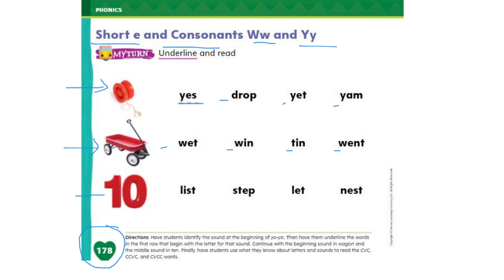The last picture is number ten — it has that short E sound in the middle. Now we need to underline the words with short E in the middle like ten. The words are: list, step, let, nest. Go ahead and underline the words with short E in the middle like ten.